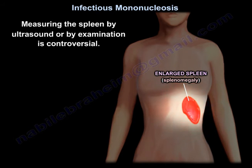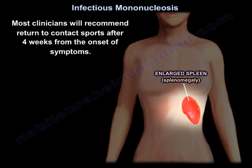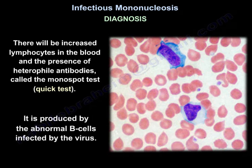Measuring the spleen by ultrasound or physical examination is controversial. Most clinicians recommend return to contact sports after four weeks from the onset of symptoms. Diagnosis includes increased lymphocytes in the blood and the presence of heterophile antibody, called the mono-spot test, which is a quick test produced by the abnormal B cells infected by the virus.